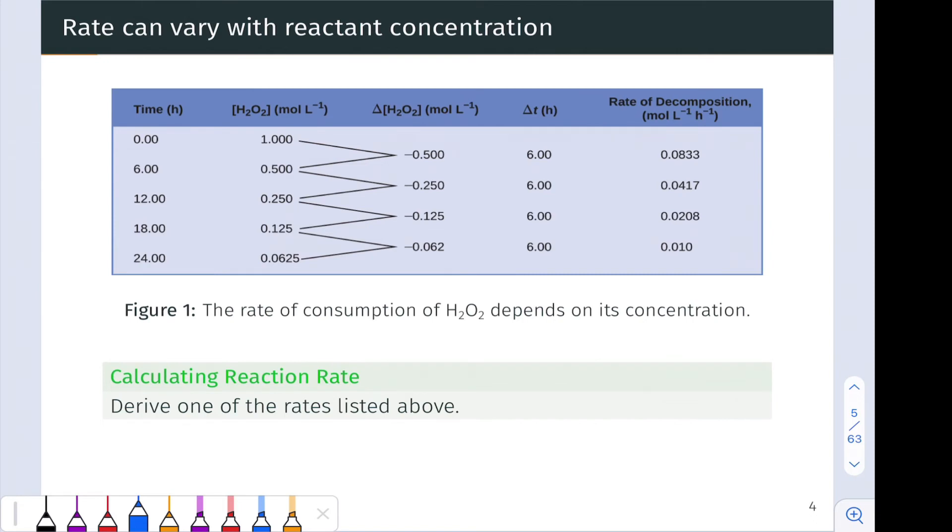And we see that in this table. Notice that the reaction rate, the rate of decomposition, is different early in the reaction when we have quite a bit of H2O2 there than later in the reaction where most of the H2O2 has gone. So let's derive one of these rates of decomposition listed on the right-hand side of this table using the data that's given. So let's look, for example, at this rate, 0.0833 moles per liter per hour. Notice the units. Moles per liter per hour, the units of the rate. A change in concentration, moles per liter per time per hour.